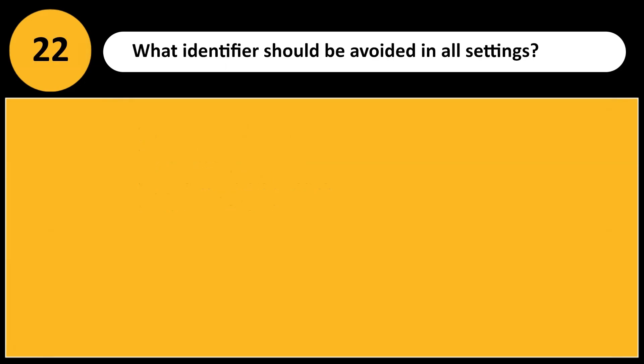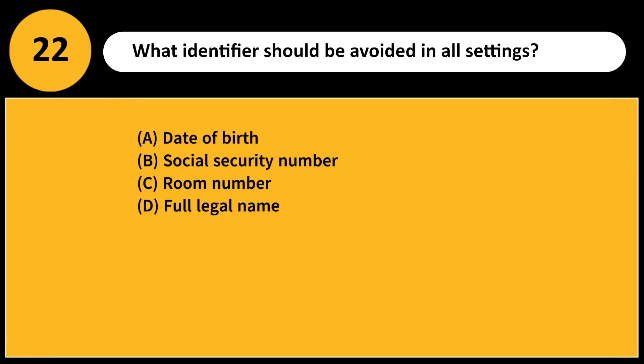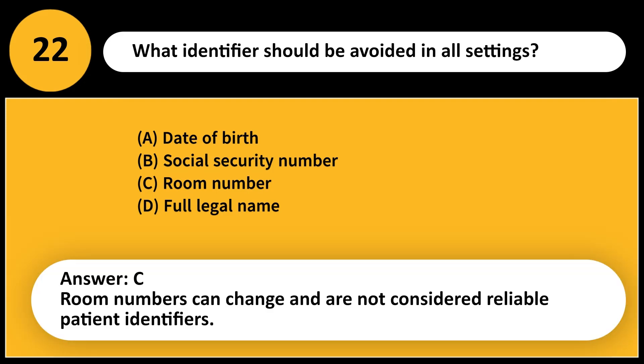What identifier should be avoided in all settings? A. Date of birth. B. Social security number. C. Room number. D. Full legal name. Answer: C. Room numbers can change and are not considered reliable patient identifiers.